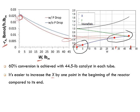A higher rate of reaction means you require less catalyst to achieve a given conversion. Because at the beginning of the reactor the rate of reaction is high, you will require less catalyst to achieve that 10-point increase in conversion, compared to the end where you also increase by 10 points but need more than 10 pounds of catalyst.